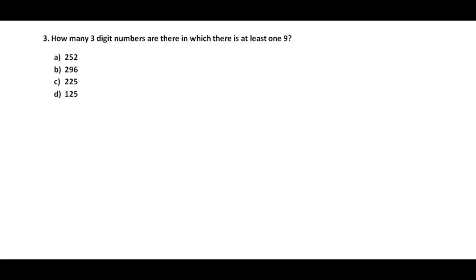Next question: how many 3-digit numbers are there in which there is at least one 9? That means there can be one 9, two 9s, or all three digits can be 9. Instead of taking multiple cases, we will follow a reverse approach. We already know the total 3-digit numbers are 900. From these, we will subtract those numbers in which there is zero 9 — what remains will be those numbers with at least one 9.